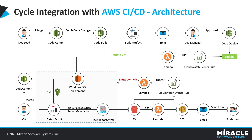On the left-hand side of the architecture, the dev lead is going to merge code for the front-end or back-end application into the CodeCommit repository, and the QA lead is going to merge the Cycle test scripts into the CodeCommit repository. CodeCommit is a version control service by AWS.